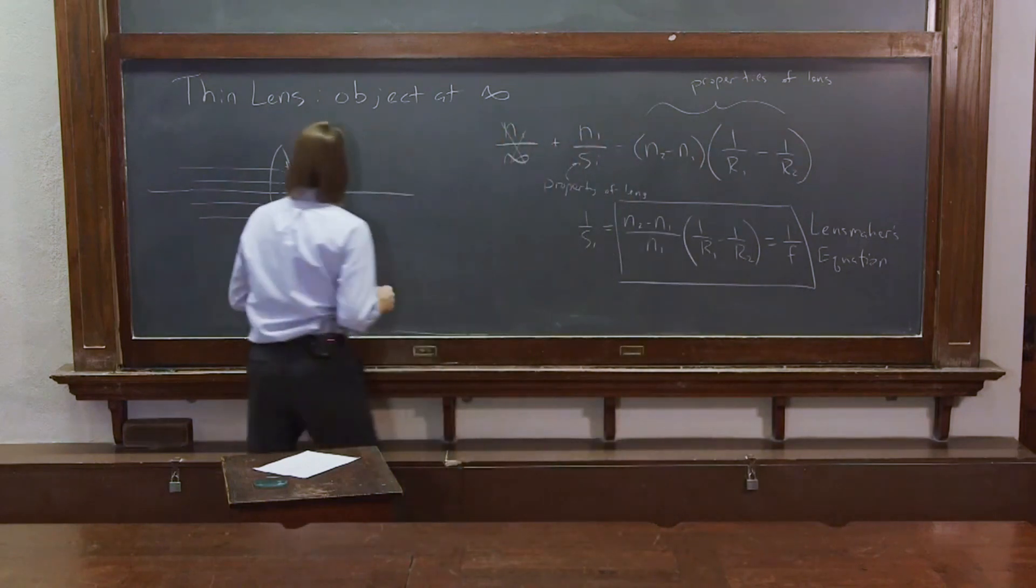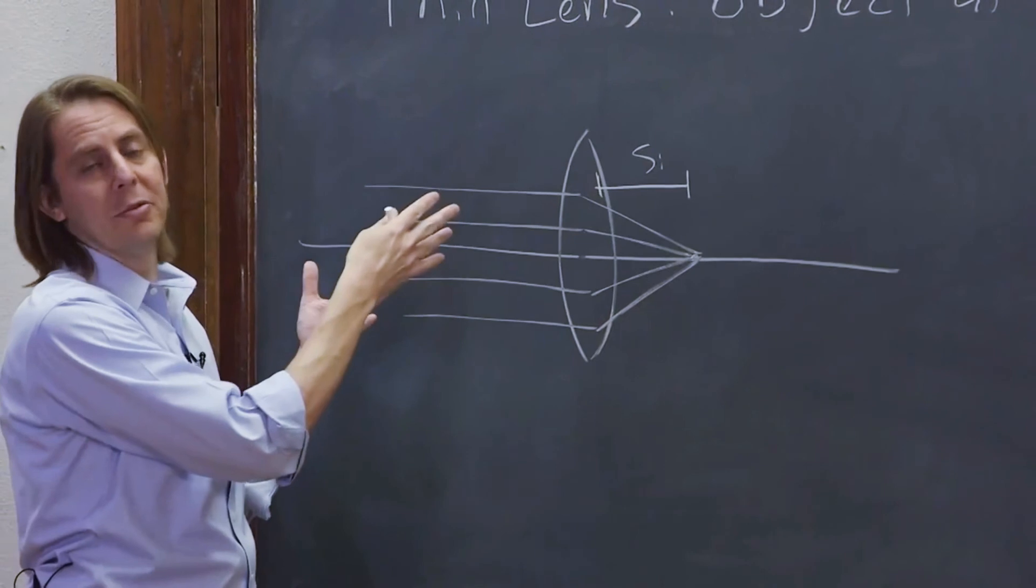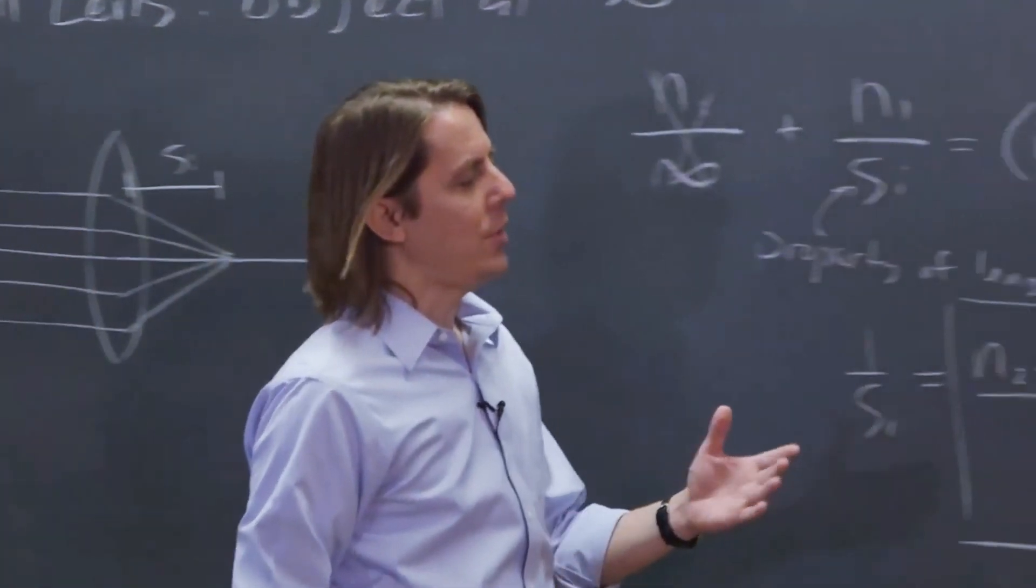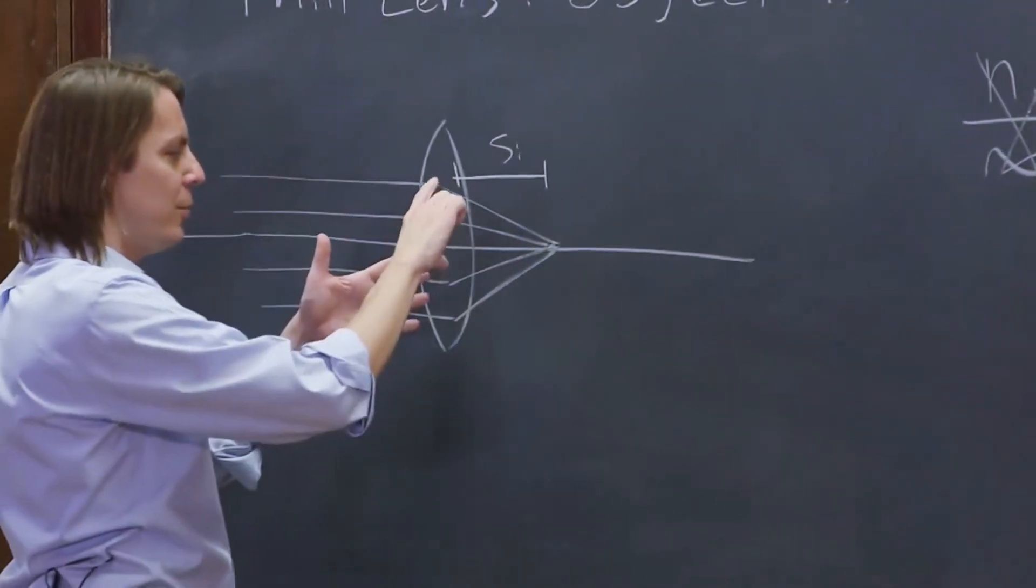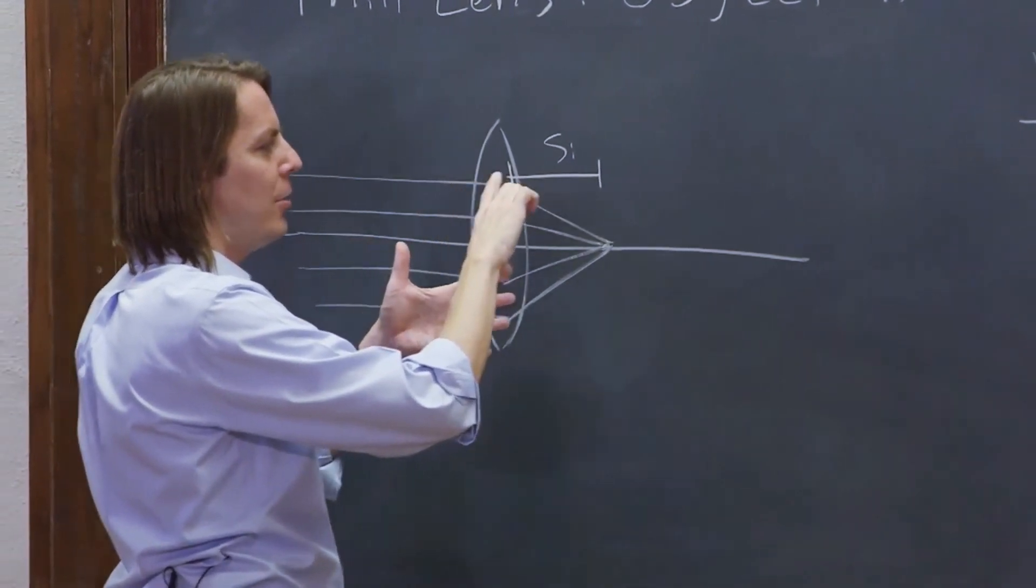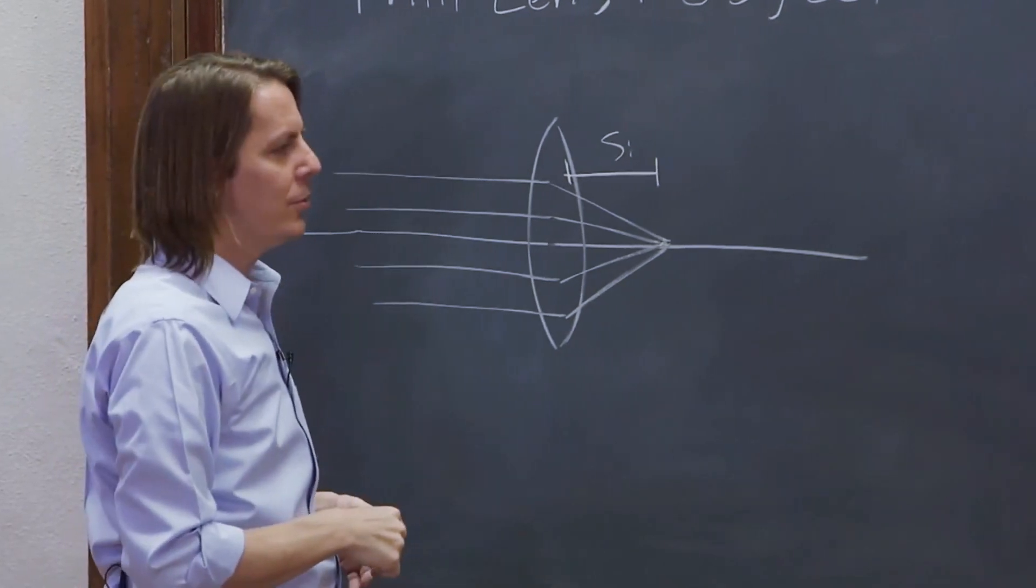The focal length is just the special image distance you get when the rays are parallel. That's really the only special case you can come up with. So the focal length is often how we define the focusing power of a lens. Does it take parallel rays and focus them really close to its surface? It would be a strongly focusing lens. Does it take parallel rays and focus them really far from its surface? That would be a weakly focusing lens.